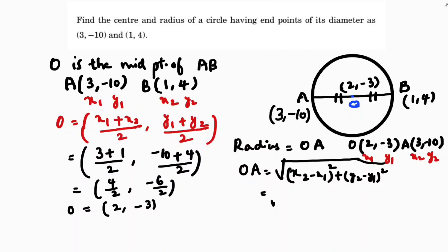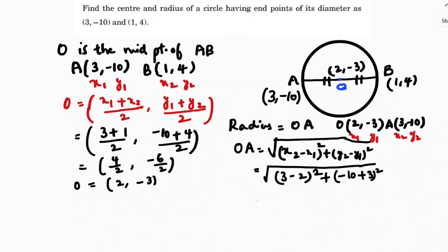This distance formula. So √[x2 is here 3, (3 - 2)² + (y2 -10 minus of -3, -10 minus of -3 is +3)²]. So here, 3 - 2, which is nothing but 1, and -7. -10 + 3 is -7.